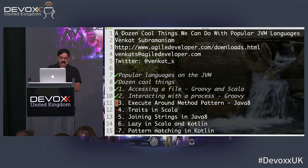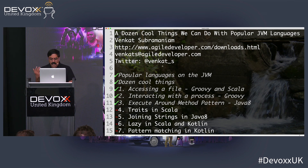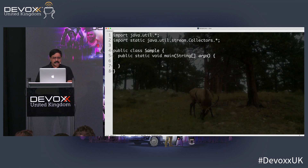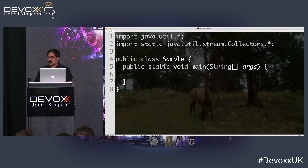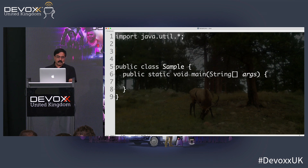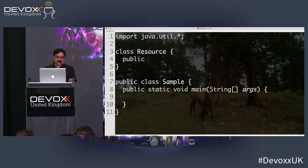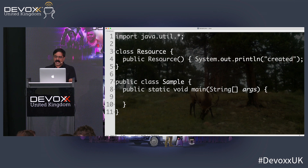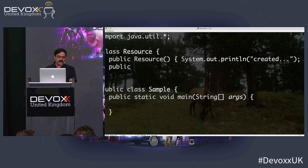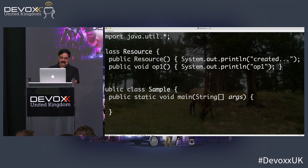But let's also be objective. Java has come a long way doing wonderful things. I want to talk about a beautiful pattern called the Execute Around Method pattern — one of my favorites when using the functional style of programming. Let's understand the problem. We have a class called Resource with a constructor that outputs 'created' and a function op1 that outputs 'op1'.